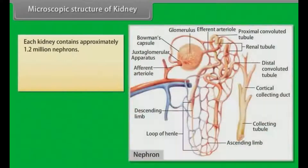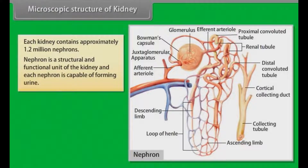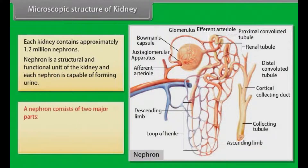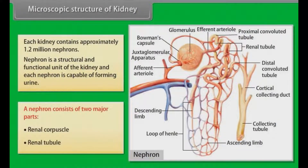Microscopic structure of kidney. Each kidney contains approximately 1.2 million nephrons. The nephron is the structural and functional unit of the kidney, and each nephron is capable of forming urine. A nephron consists of two major parts: the renal corpuscle and the renal tubule.